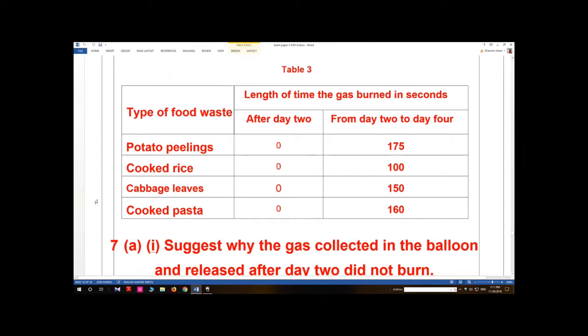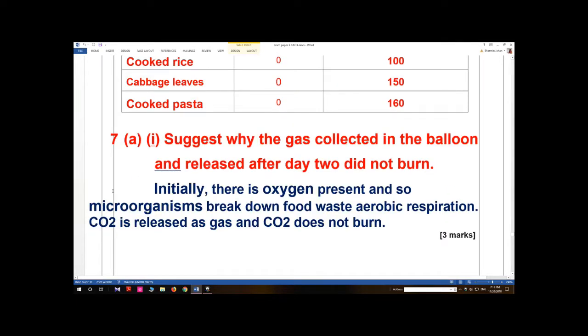Type of food waste: potato peelings from day two to day four is 175, cooked rice is 100, cabbage leaves is 150, and cooked pasta is 160. Question 7(a)(i): Suggest why the gas collected in the balloon and released after day two did not burn.